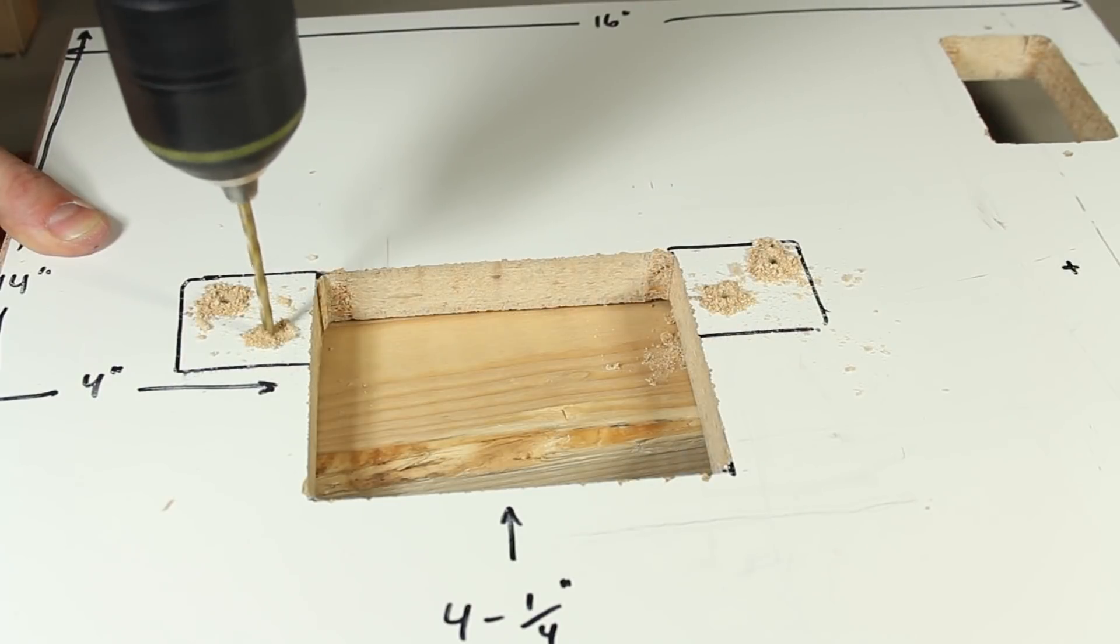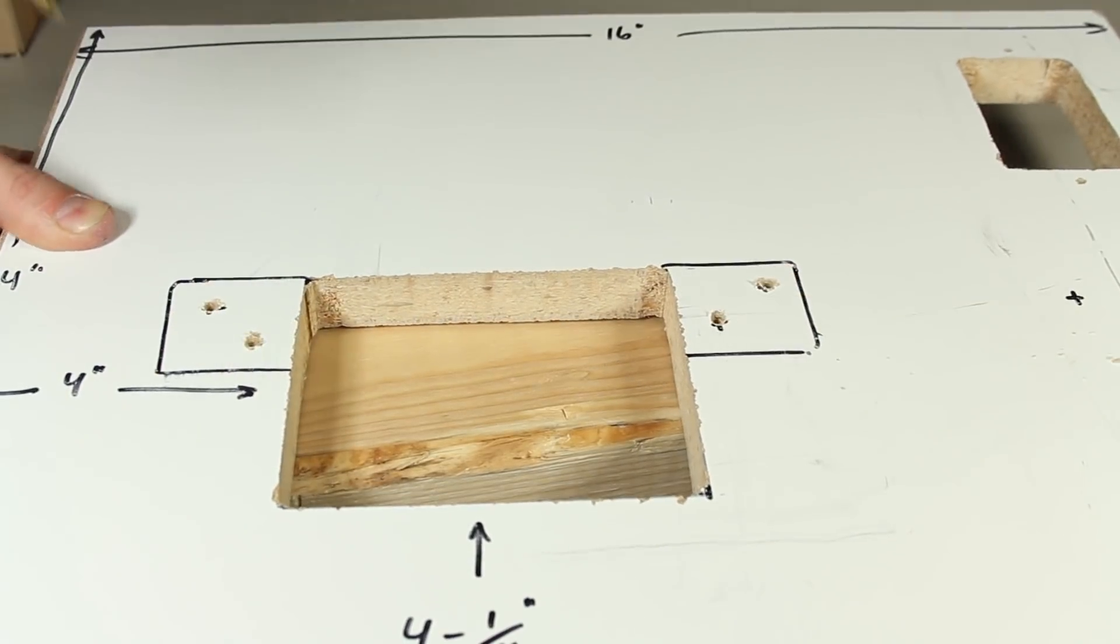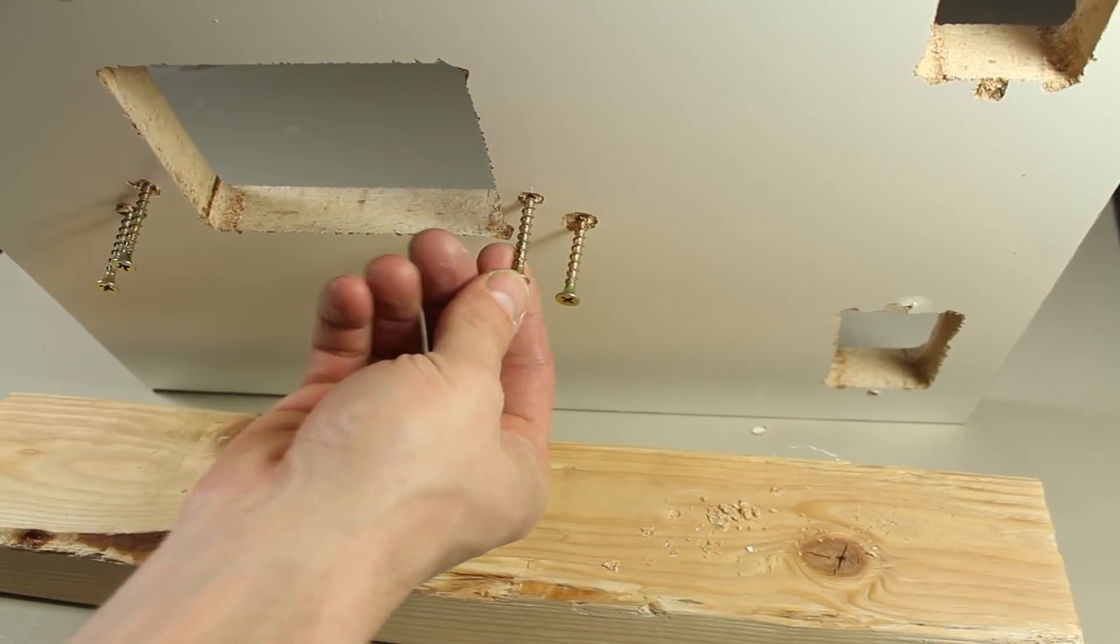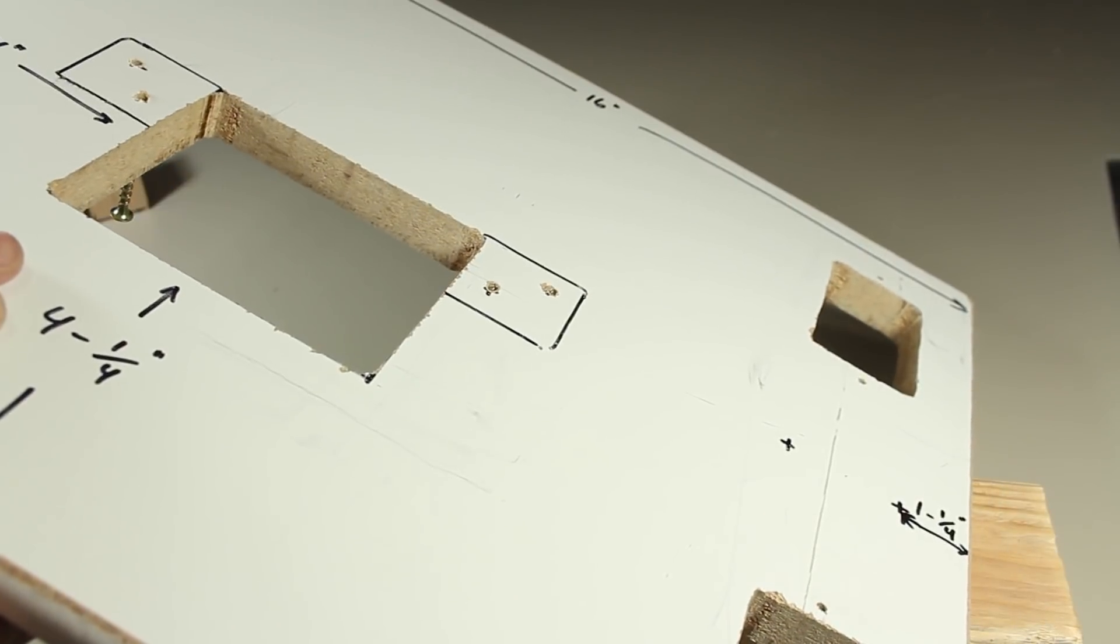These blocks will need to be secured flush with the top of the center hole, so let's trace the edges and drill 4 pilot holes on diagonals. They'll eventually be held in place with screws from the bottom side.